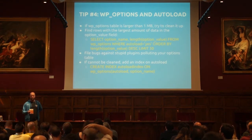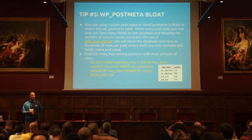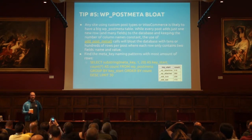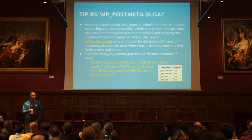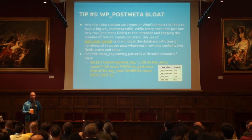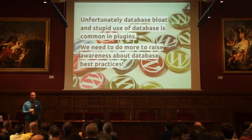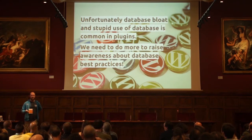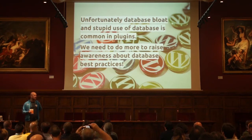Another table that unfortunately often grows big is the wp_postmeta table. Especially if you have WooCommerce installed, it will generate lots and lots of rows in this table. With this command you can find out what type of rows are most common in your wp_postmeta table. Unfortunately, lots of plugins pollute this table. We need to raise awareness among plugin and theme developers that you can't use the post meta functions too much, because every single time you save something it generates one new row in the database.